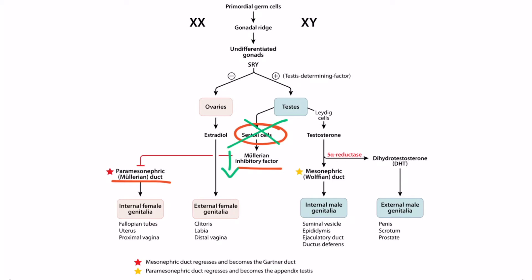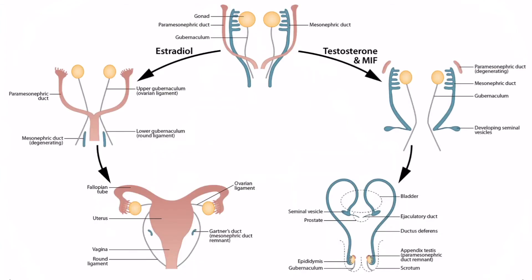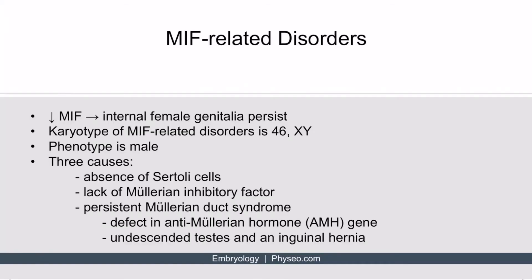If the Müllerian duct develops, then the internal female genitalia will also develop. The paramesonephric duct, or Müllerian duct, is responsible for the formation of the internal female genitalia. These individuals have a karyotype of 46XY and are phenotypically male. There are three causes: absence of Sertoli cells, a lack of Müllerian inhibitory factor, and persistent Müllerian duct syndrome.